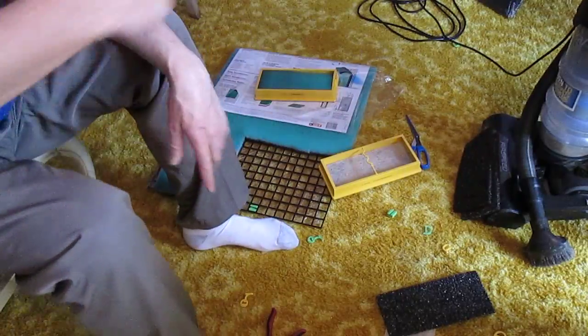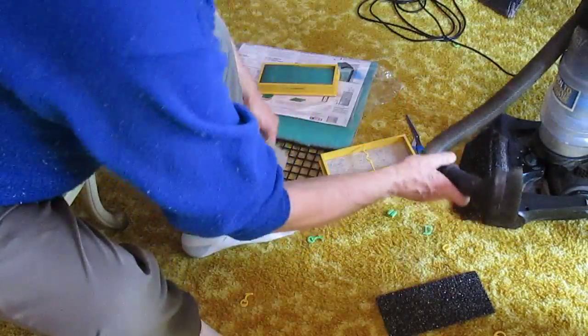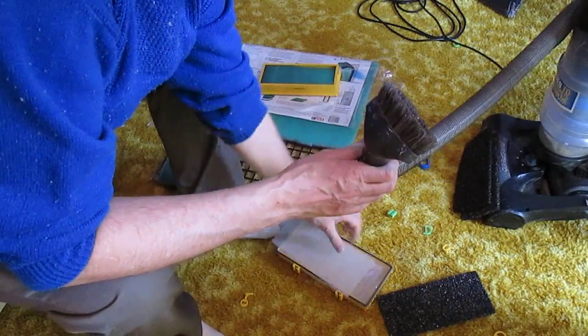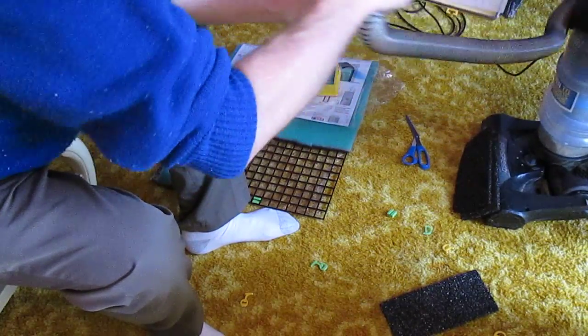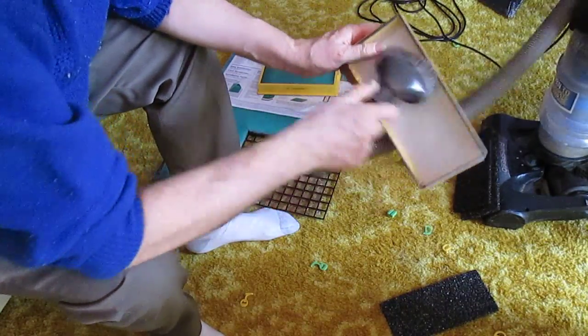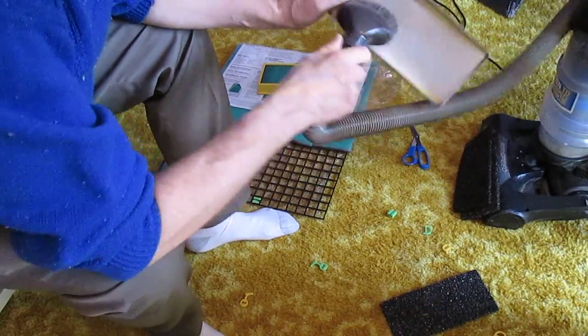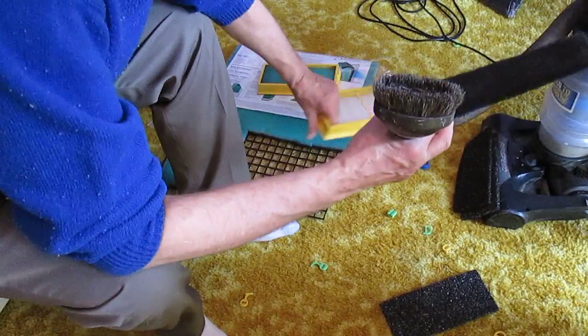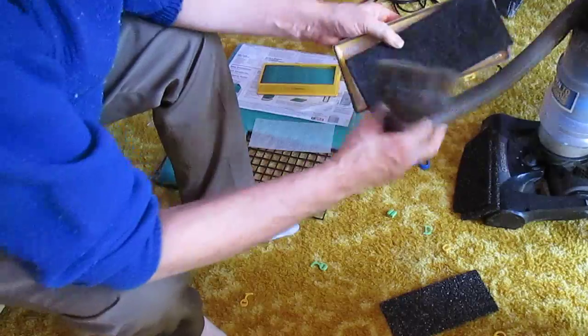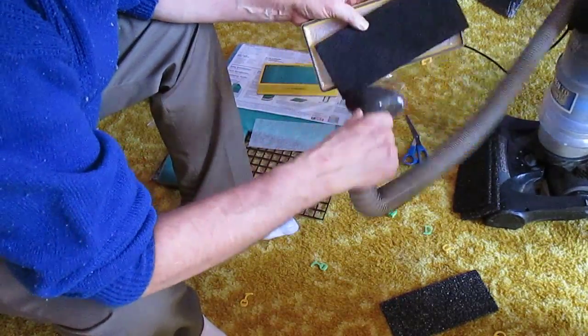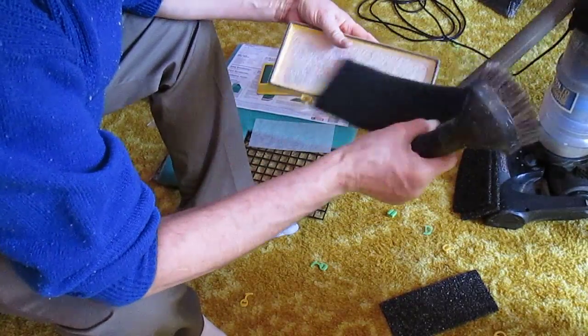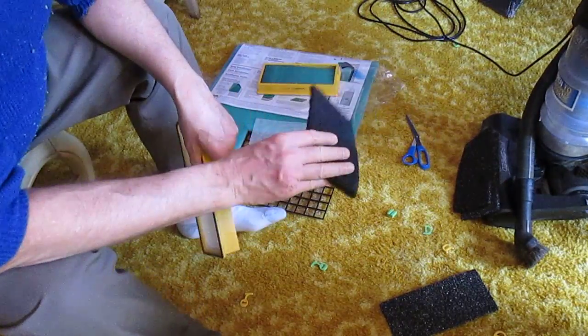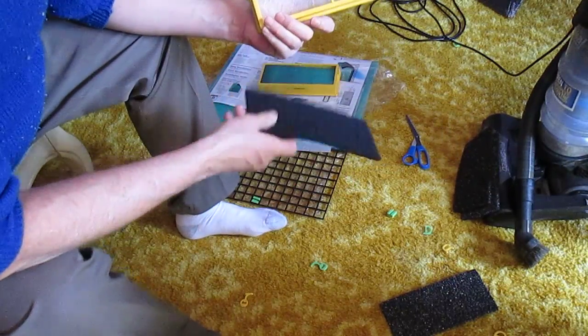So what I do is I take a vacuum cleaner and vacuum these off. I keep this one and use it as a pre-filter on the other HEPA filters. I get it for free, why not use it?